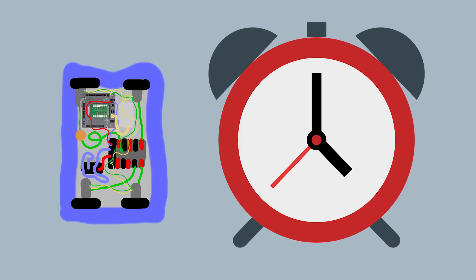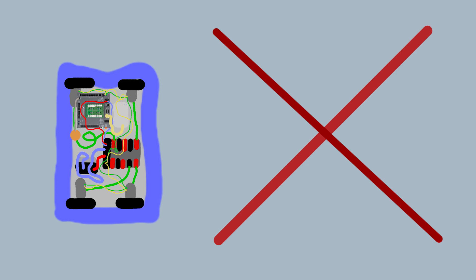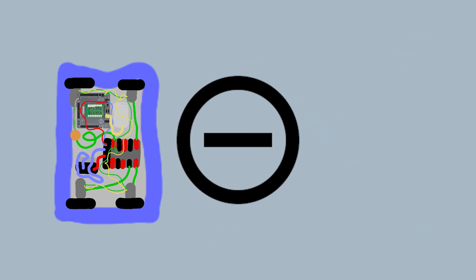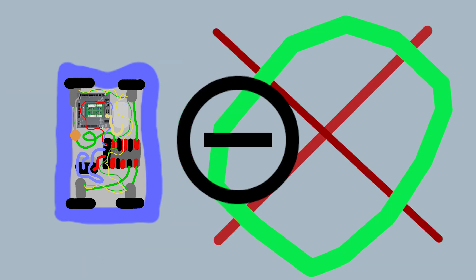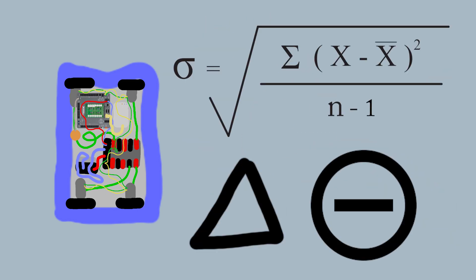The robot knows where it is at all times. It knows this because it knows where it isn't. By subtracting where it is from where it isn't, or where it isn't from where it is, whichever is greater, it obtains a difference or deviation.